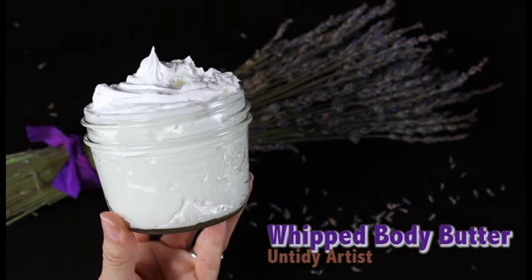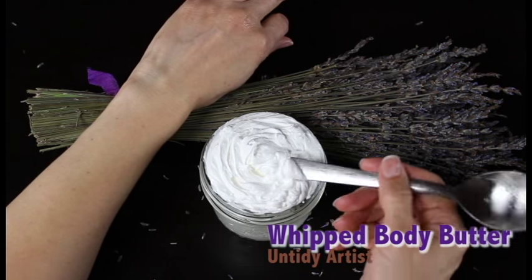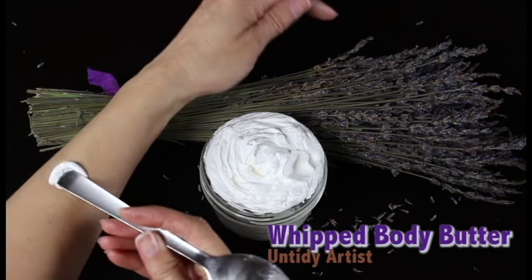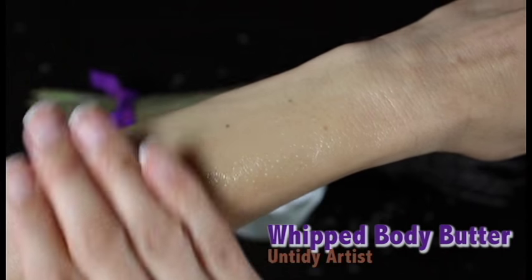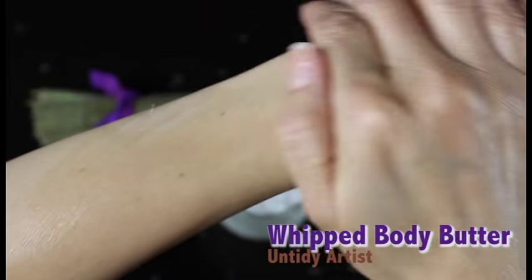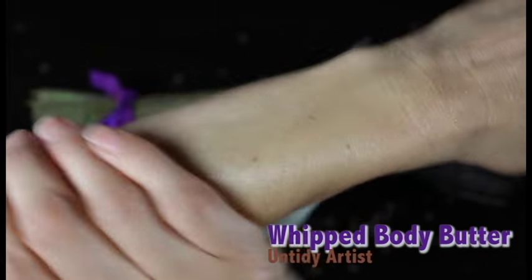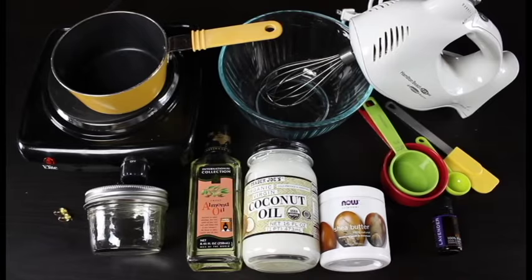Hey guys, welcome back. Today on The Untidy Artist we're making a whipped body butter with lavender. A body butter is a very richly moisturizing type of lotion that's made up mostly of oils and rich butters, and it's just really good for dry skin. So let's grab some supplies and get started.